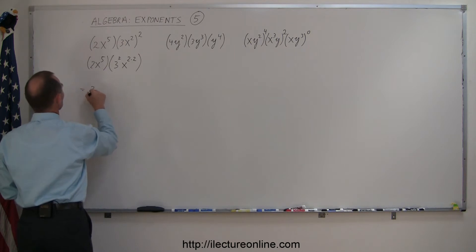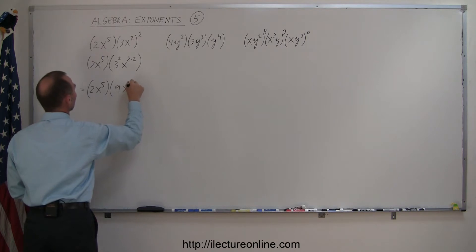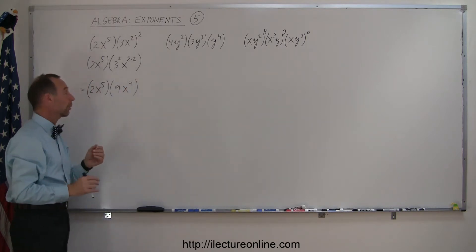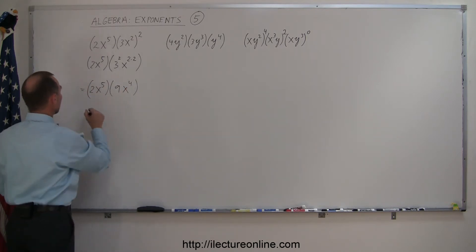So this therefore is equal to 2x to the fifth multiplied times 9x to the fourth. And now we can go ahead and multiply the rest. So here we simply have 2 times 9, that's 18. And since the bases are the same here, we add exponents, so we get x to the 5 plus 4, which becomes 18x to the 9 power.